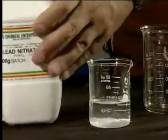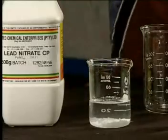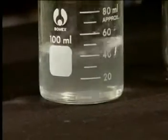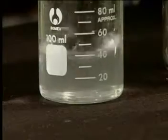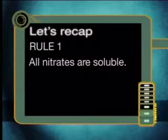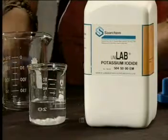In this lesson we will investigate how to precipitate insoluble salts from two solutions of soluble salts. I'm going to start by showing you how to prepare that beautiful precipitate we saw at the beginning of the lesson. We begin by making a solution of lead nitrate. Take a careful look at the solution — notice that the solute has dissolved completely, just as rule number one predicted. Remember, all nitrates are soluble.